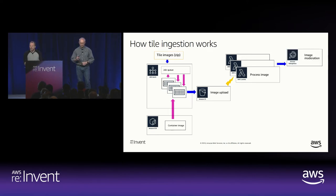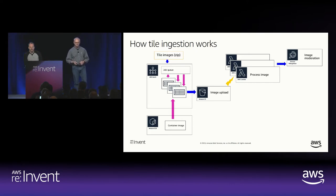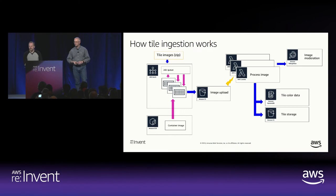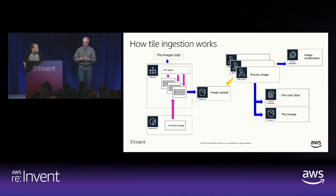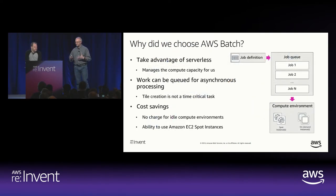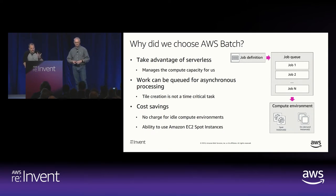As those images upload to S3, there's an event hookup which triggers our Lambda image processing function. We use image recognition to check for moderation labels and make sure it's a clean image. Then we compute color information for the image and store a thumbnail. We store things in DynamoDB and S3. Those lower two boxes — the metadata about color and the resized individual images — are what we consider to be a tile gallery. This is the first time at re:Invent we've used Batch as part of a .NET demo.